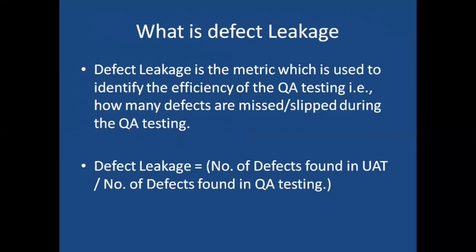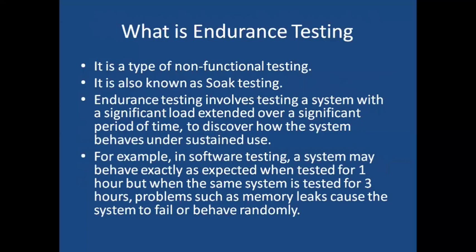What is defect leakage? Defect leakage is a metric used to identify the efficiency of QA testing — that is, how many defects were missed or slipped during QA testing. The formula is: defect leakage = number of defects found in user acceptance testing divided by number of defects found in QA testing.